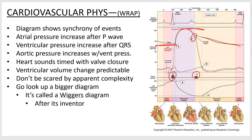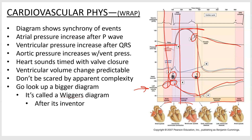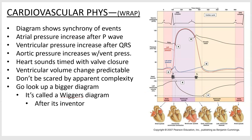You can also see the heart sounds on the diagram: the lub (S1) occurs when the ventricles contract and the AV valves close; the dub (S2) corresponds to the semilunar valves closing. The volume row shows that at the start of ventricular contraction the ventricles have maximum volume; as the heart contracts it squeezes blood out, then slowly refills. The diagram also labels atrial systole, ventricular systole, and ventricular diastole, all lining up vertically with time along the x-axis.